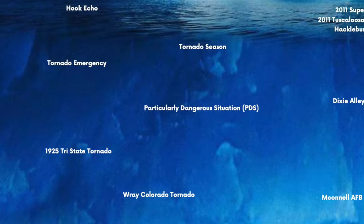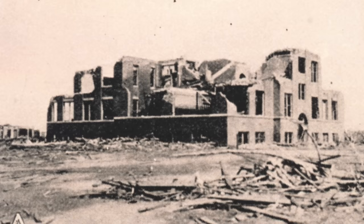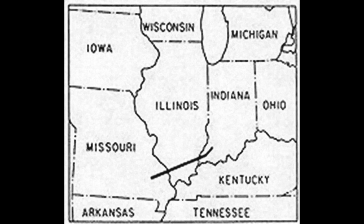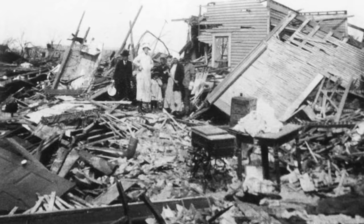The 1925 Tri-State Tornado is the single deadliest tornado in US history with 695 confirmed fatalities. It was part of a larger outbreak on March 18th, 1925. This particular F5 traveled from southern Missouri all the way to Indiana — over 219 miles — making it also the longest tornado track. Let's hope this remains the deadliest tornado in US history for a very long time.